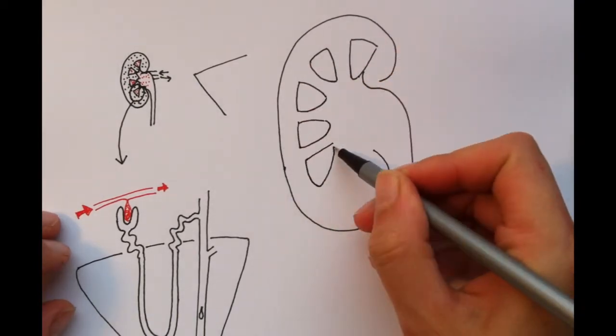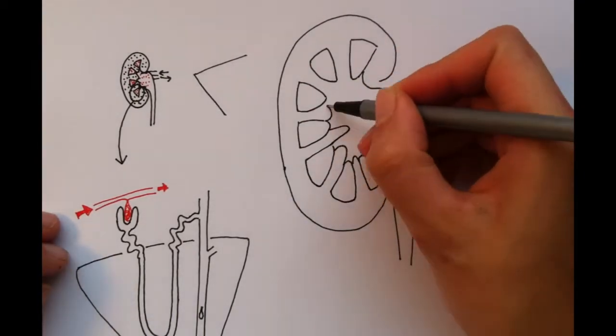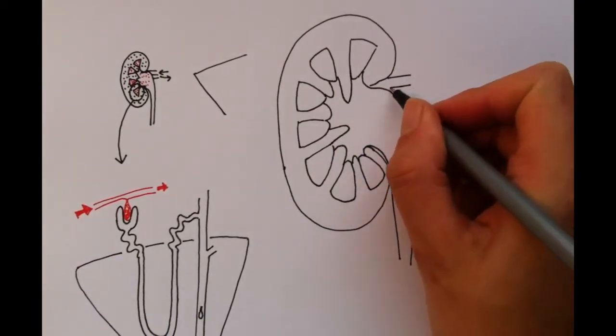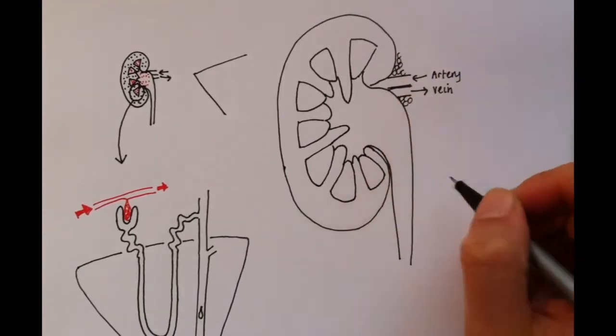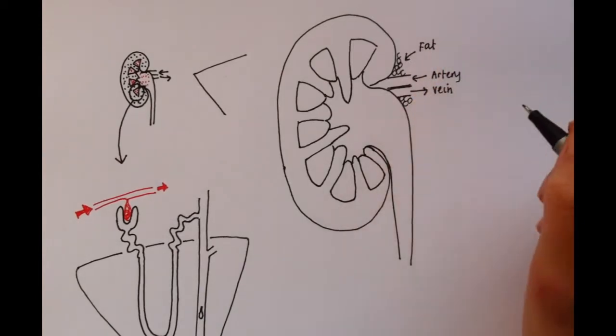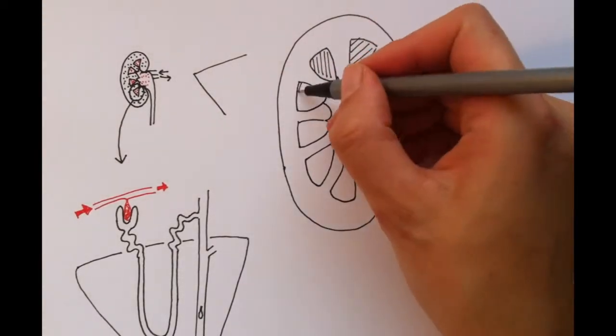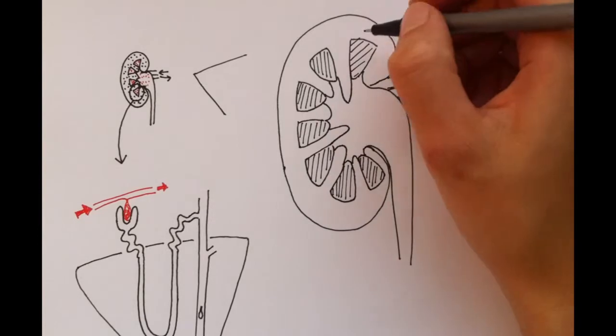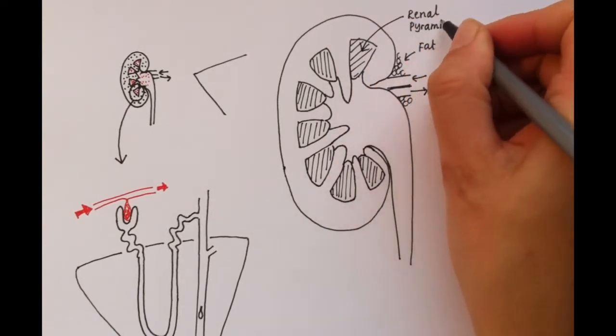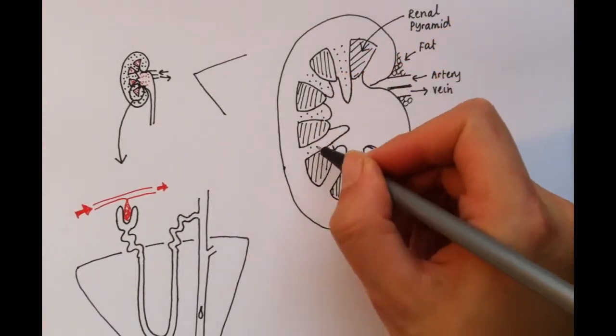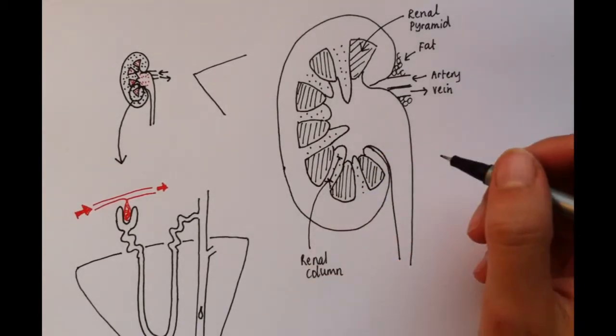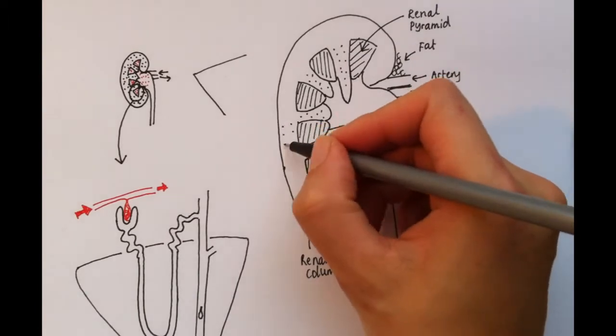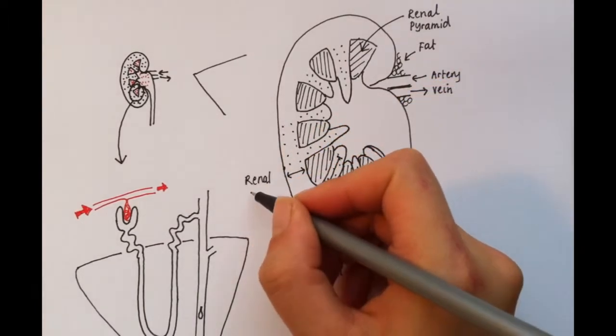I'm now going to go through the gross anatomy of the kidneys. As we know, the renal vein and artery enter and exit the kidney via the hilum. The kidney is also surrounded by a layer of perinephric fat, which acts as a protective mechanism in case of trauma. The renal medulla is arranged as a series of pyramids. In between these pyramids are extensions of the cortex. This is called the renal column, or sometimes called columns of Bertin. Surrounding the renal pyramids is the cortex.